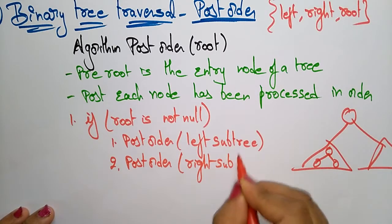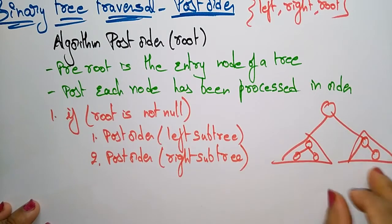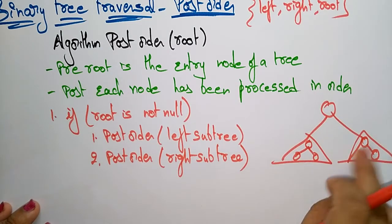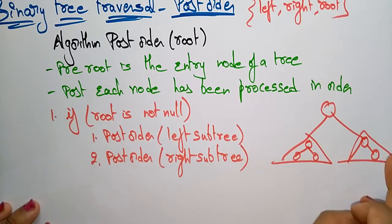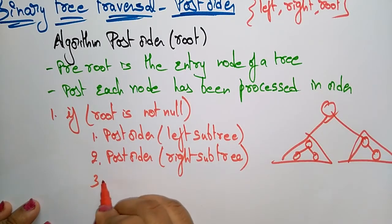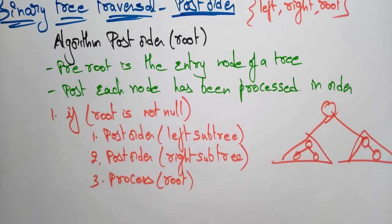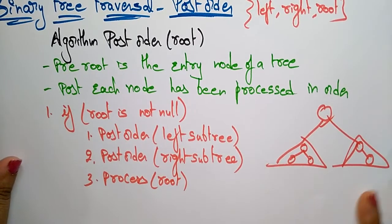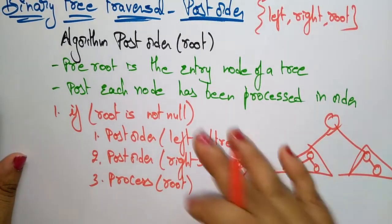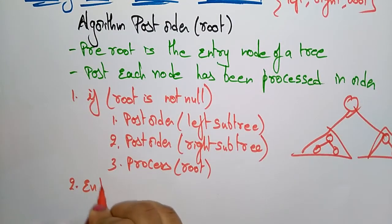Next, come to the right subtree — that is post-order right subtree. Visit whatever nodes are present by following the post-order technique: left, right, root. After that, you have to process the main root — process root. Writing the algorithm is very easy: just implement the technique and write it in pseudo code.